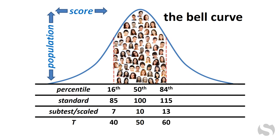The average range for standard scores is between 85 and 115. The average range for subtest or scale scores is between 7 and 13. And the average range for T scores is between 40 and 60.